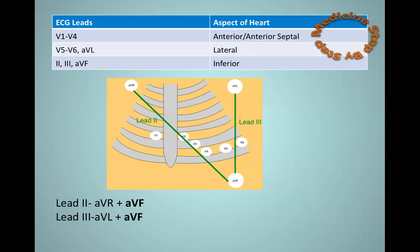As I mentioned earlier, the virtual leads are made using a combination of the other leads. Lead 2 is derived from a combination of AVR and AVF. Lead 3 from a combination of AVL and AVF. And so inevitably, by being derived from AVF, leads 2 and 3 look at the heart inferiorly.